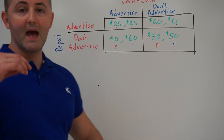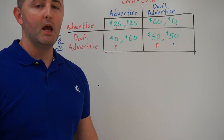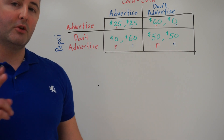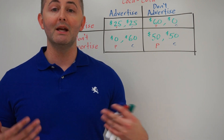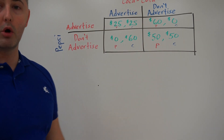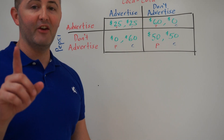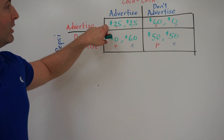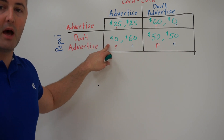We're going to start with Pepsi. We want to know if Pepsi has a dominant strategy — what should Pepsi do depending on what Coke does? If Coke advertises, what's better for Pepsi? And if Coke doesn't advertise, what's better for Pepsi? If both answers are the same, Pepsi has a dominant strategy. So, if Coke advertises, Pepsi's two options yield $25 if they advertise or $0 if they don't.